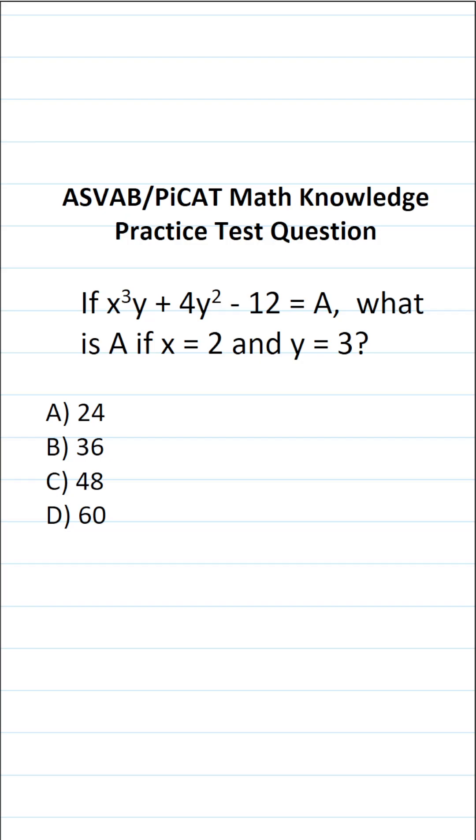This math knowledge practice test question for the ASVAB and PICAT says, x to the third power times y plus 4y squared minus 12 equals A. What is A if x equals 2 and y equals 3?